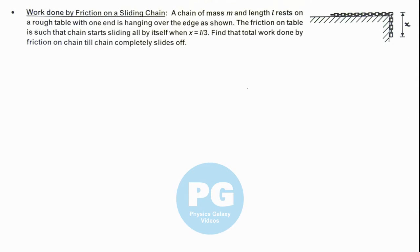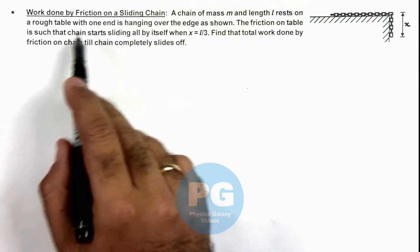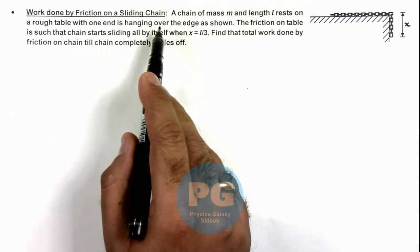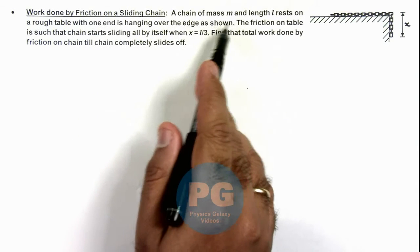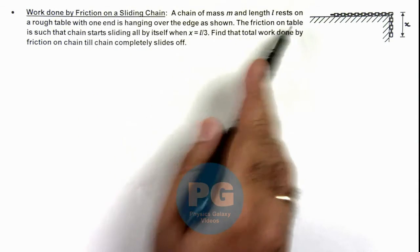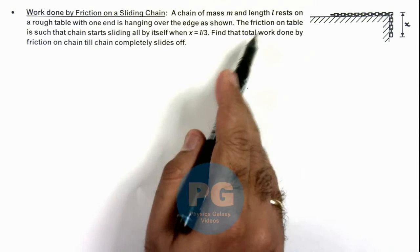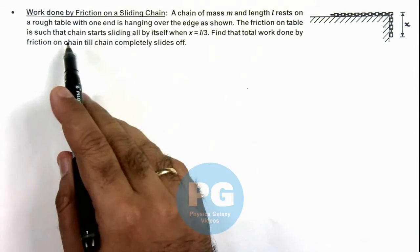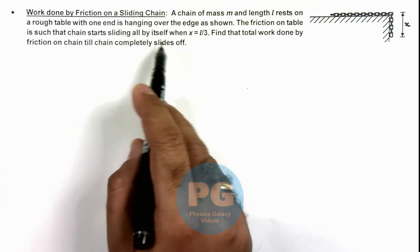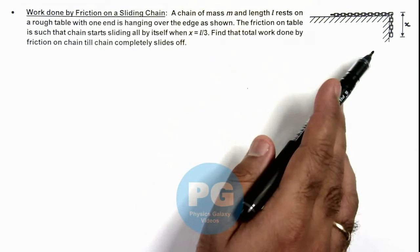In this illustration we'll be discussing the work done by friction on a sliding chain. Here we are given that a chain of mass m and length l rests on a rough table with one end hanging over the edge as shown.